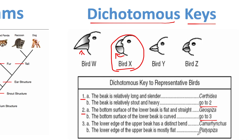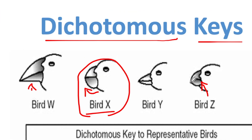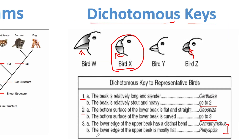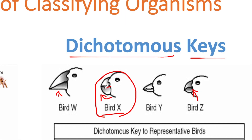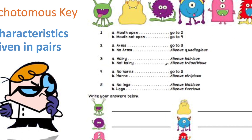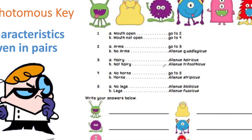Now we're at Step Three with two possible bird names — I won't attempt to pronounce them. It's either going to be the Platyspiza or the Camarhynchus. Bird X: 'The lower edge of the upper beak has a distinct bend' — no. We can see how one of the birds has a distinct bend in its beak. Then B: 'The lower edge of the upper beak is mostly flat' — see how this lower edge is mostly flat — so that would be the answer for Bird X.